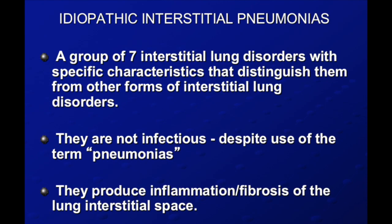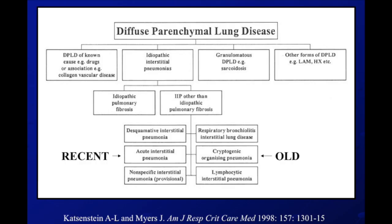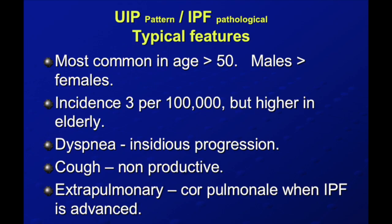Now let's start. All of you know that interstitial pneumonias have 7 types. Though they are called pneumonias, they are not infected. They were recently described into DIP, AIP, NSIP, RBILD, cryptogenic organizing pneumonia, LIP, plus UIP. Now they are separated into smoking-related and non-smoking-related — RBILD is smoking-related.